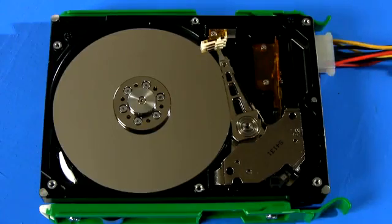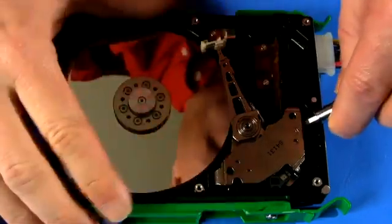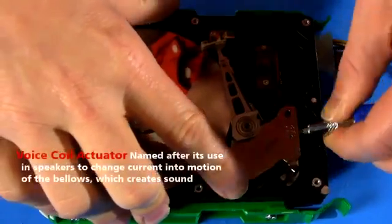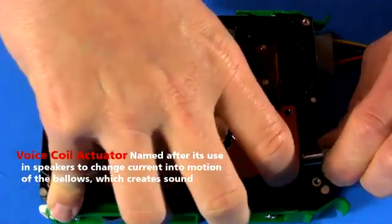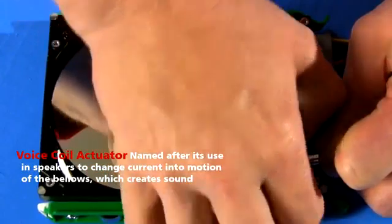The first order of business is to move it with great control. To position the arm, engineers use a voice coil actuator. The base of the arm sits between two powerful magnets—they're so strong they're actually kind of hard to pull apart—there.